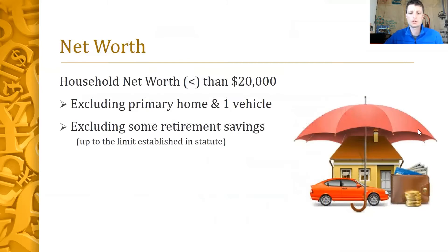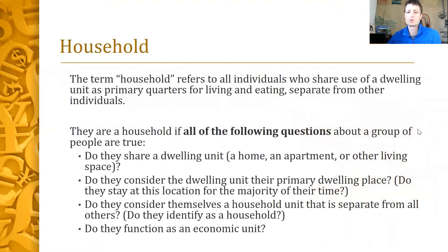Let's start with the IDA net worth limits. As an asset building program, we have a net worth limit of $20,000, excluding the assets and debts of a primary home, one vehicle, and some retirement savings. When we say household, we're talking about all individuals who share the use of a dwelling as a primary quarters for living and eating separate from other individuals. If you can answer yes to all the questions about a group of people, these people are considered a household for IDA eligibility purposes.